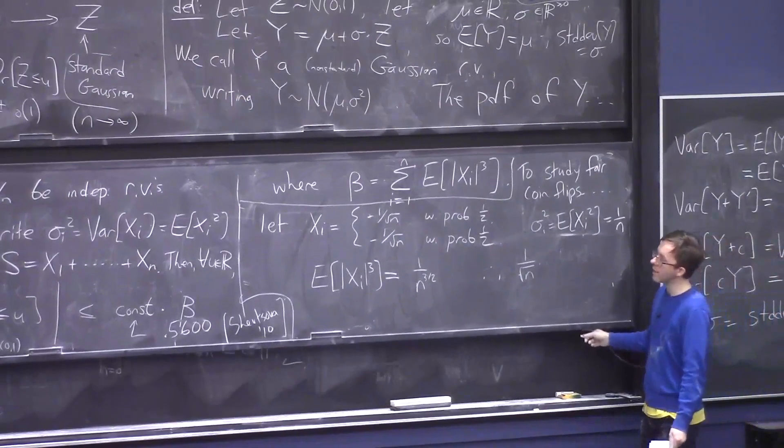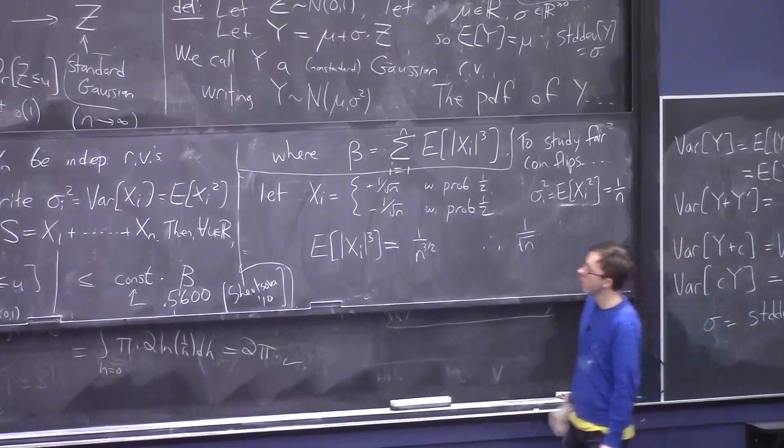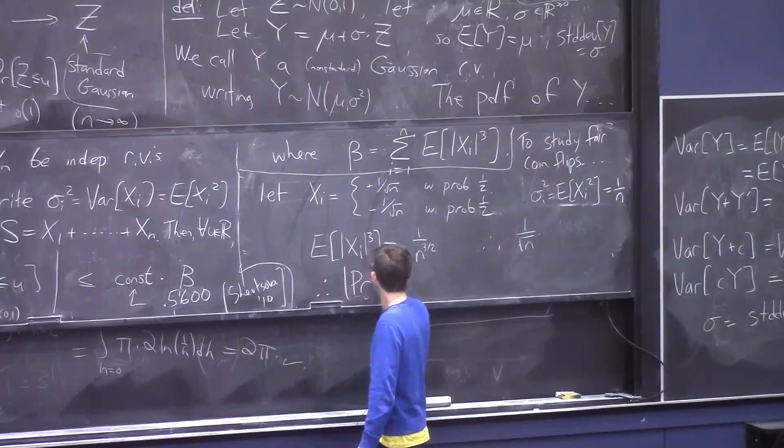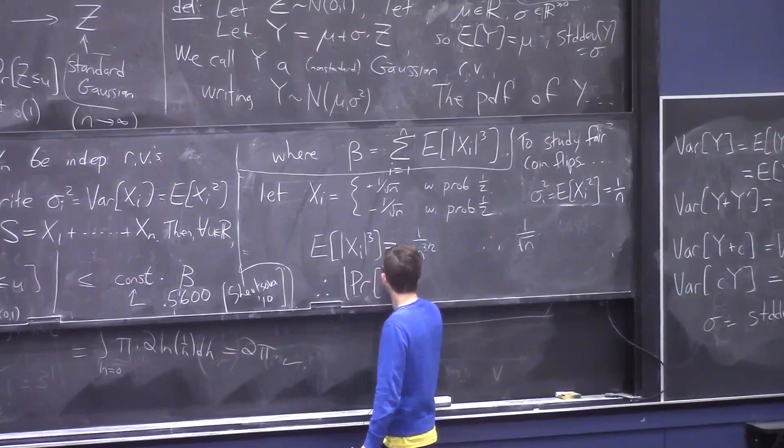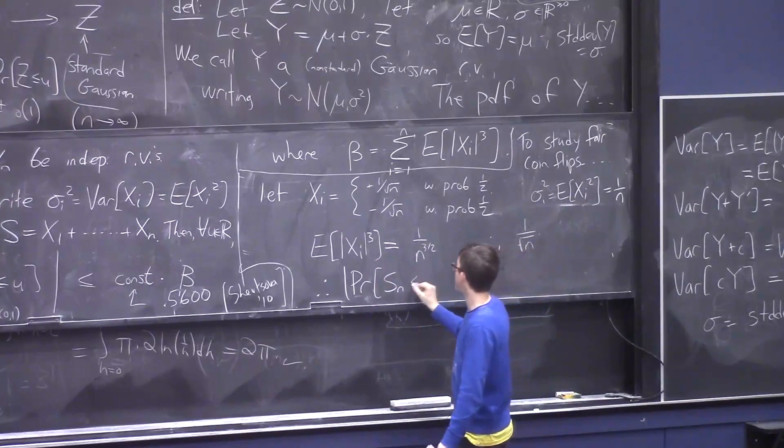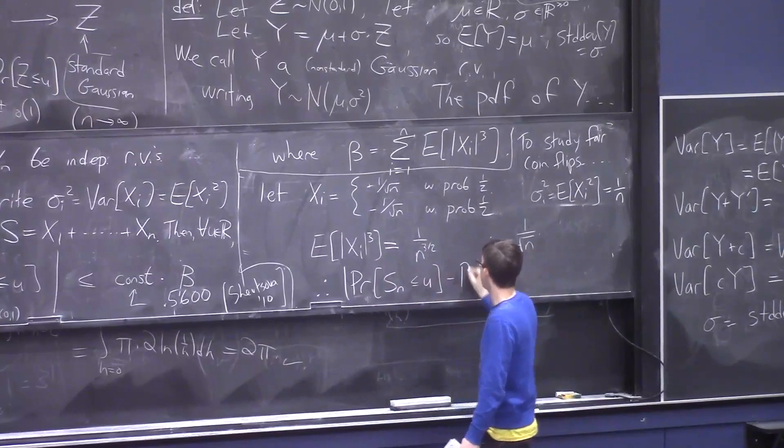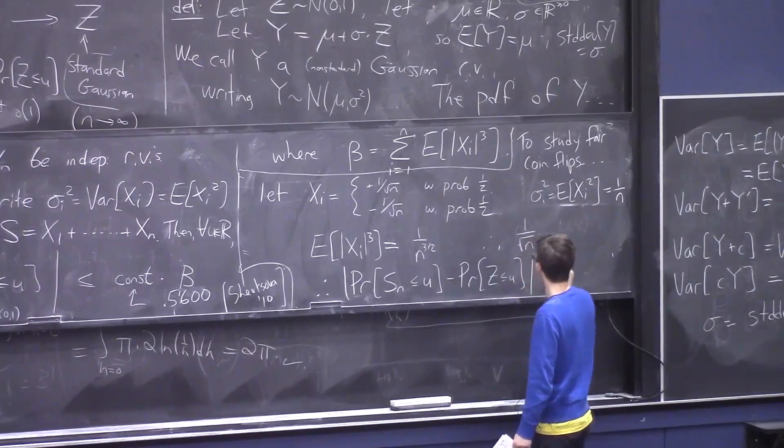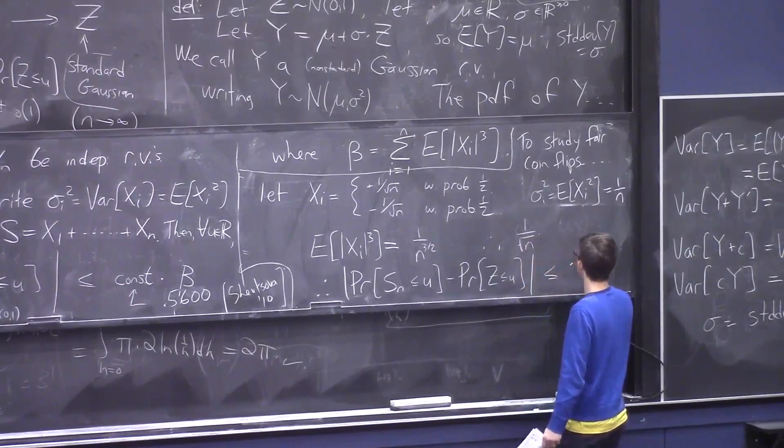Okay, and therefore, in this particular situation, this particular coin-flipping situation, we get, you know, probability that S, let me call it Sₙ again, Sₙ is at most u, minus the probability that a Gaussian is at most u, it's real small, it's at most 0.56 over root n.